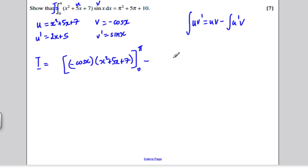u' is 2x plus 5, so the integral between 0 and π of 2x plus 5 times minus cos x. I'll take the minus out so it becomes a plus. Let's deal with this section. Putting in π, cos of π is minus 1, so minus cos of π is plus 1. Working this out, I get π squared plus 5π plus 7.